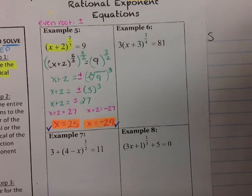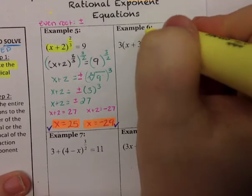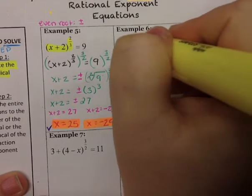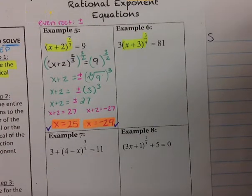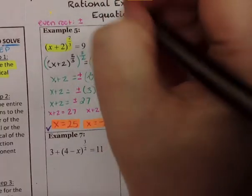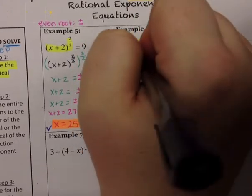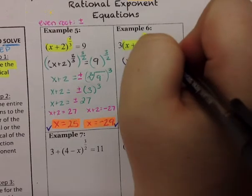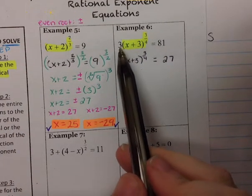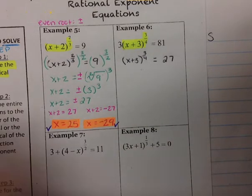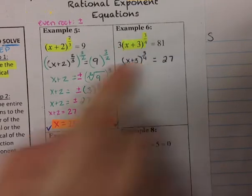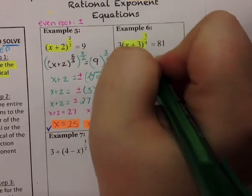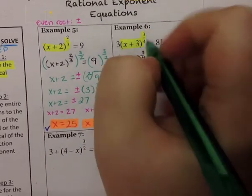On the next problem, I identify the fraction exponent and the parentheses directly attached to it — that's what needs to be isolated. There's a 3 multiplied in front, so we divide both sides by 3. This gives us (x+3)^(3/4) = 27. Now that it's isolated, we raise both sides to the reciprocal: the reciprocal of 3/4 is 4/3. In this case, the denominator of the reciprocal is odd, so we do not have a plus or minus.